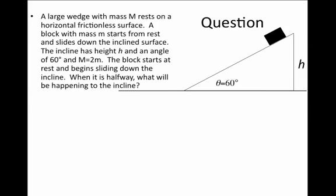Initially, there is zero momentum of the system. As the block starts to move to the left, the incline has to start moving to the right because there's no friction to hold it back. We may ask: when the block is halfway down the incline, what will be happening to the incline?